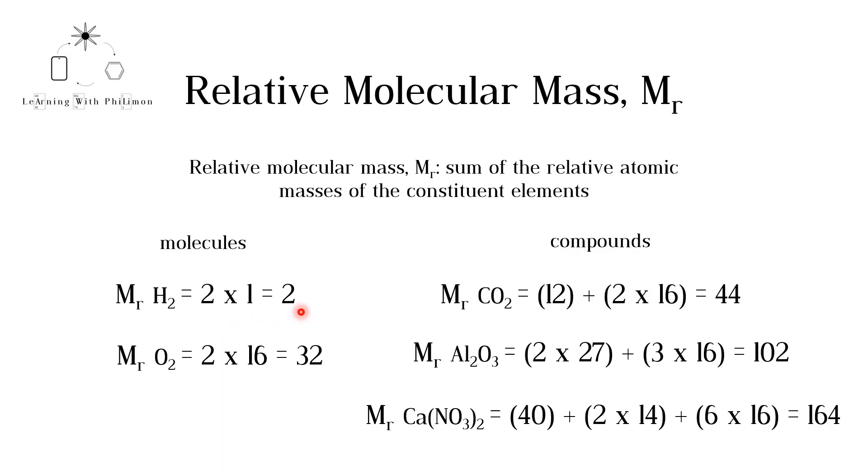Similarly to calculate the Mr of an oxygen molecule O2, we multiply 16 by 2, getting 32.